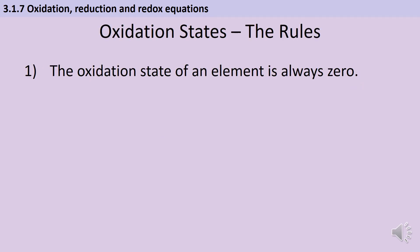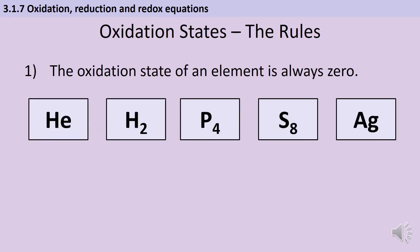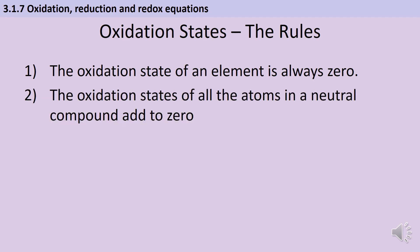The first rule is that the oxidation state of an element is always zero — whether it goes around as single atoms, as a small molecule, or even a giant structure like a metal. If it's in its elemental form its oxidation state is zero. The second rule is that the oxidation states of all the atoms in a neutral compound will add up to zero. So if you take a molecule like carbon dioxide and you know the oxidation state of oxygen, you can use that to work out the oxidation state of the carbon, because you know they must all add up to zero.